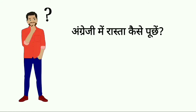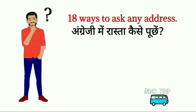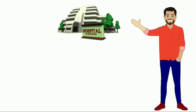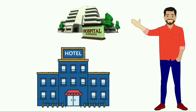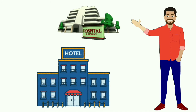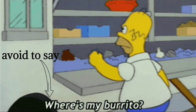Hey guys, welcome to some advanced English classes. Today in this video we are going to learn 18 advanced English phrases which are used in our daily life. Mostly these are used when we go out and ask someone for an address. We used to say things like 'where is the hospital,' 'where is the hotel,' 'where is the park,' but we have to avoid saying just 'where is.'